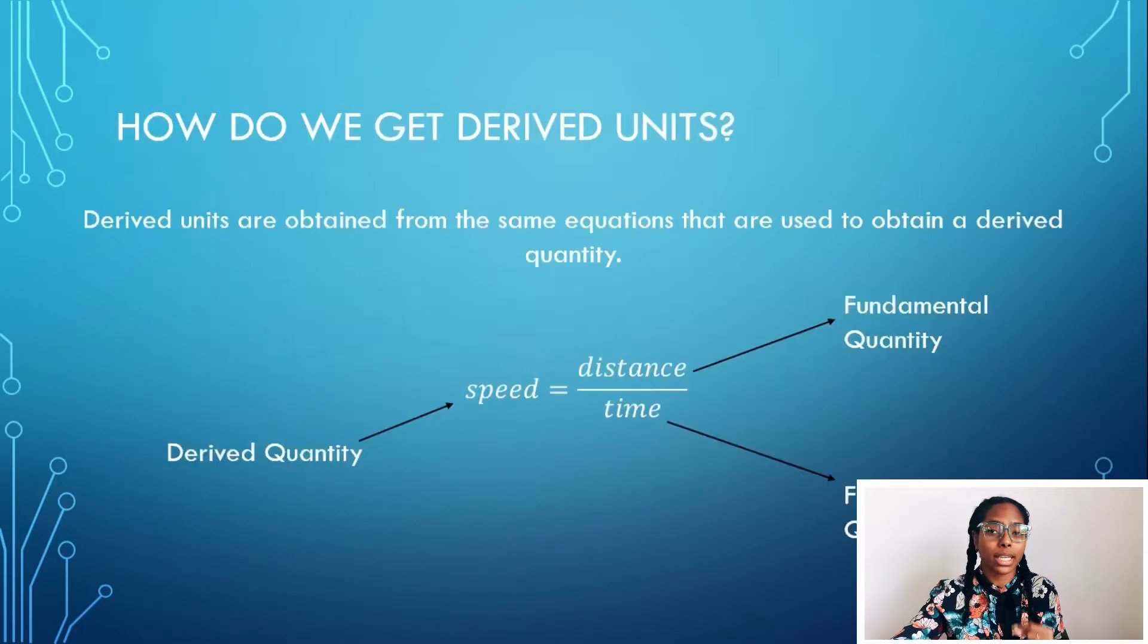So how do we get derived units? Derived units are obtained from the same equations that are used to obtain a derived quantity. So, speed. Speed is equal to distance over time. Distance is a fundamental quantity because that's length, and time is a fundamental quantity. So speed is now a derived quantity because it was found by dividing two fundamental quantities.